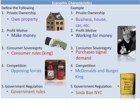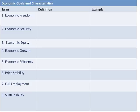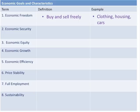Moving to economic goals and characteristics: economic freedom is the notion that you can buy and sell freely and do what you want with your money. The United States ranks around 12th or 13th in overall economic freedom. Economic security refers to safety nets built into government — such as unemployment insurance, Social Security, Medicare, and Medicaid — which are transfer payments that help citizens when they cannot help themselves.